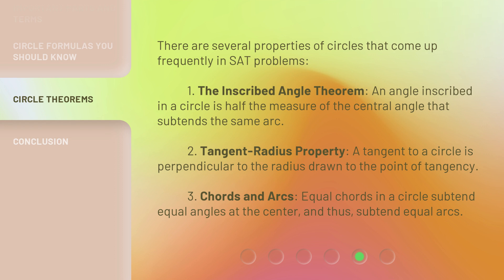2. Tangent Radius Property: a tangent to a circle is perpendicular to the radius drawn to the point of tangency.